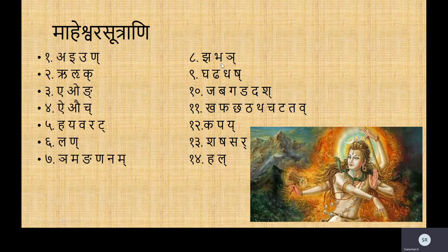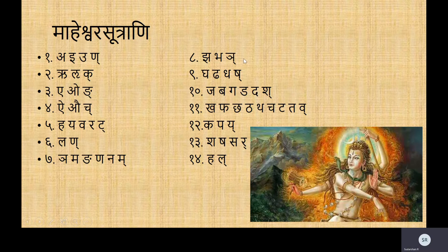For the set Bhash, the first letter is Bha and the last halanta is Sa. So everything included within Bha and Sa — of course excluding the dead halantas because they are dead — gives us Bha, Gha, Dha, Dha. You have to again not consider the Sa itself in the set because it is the dead halanta.